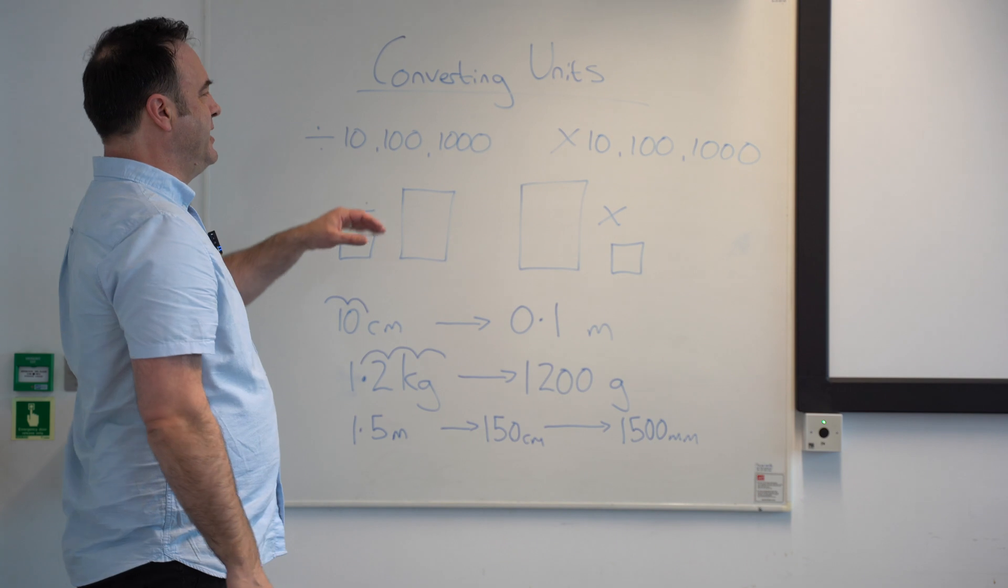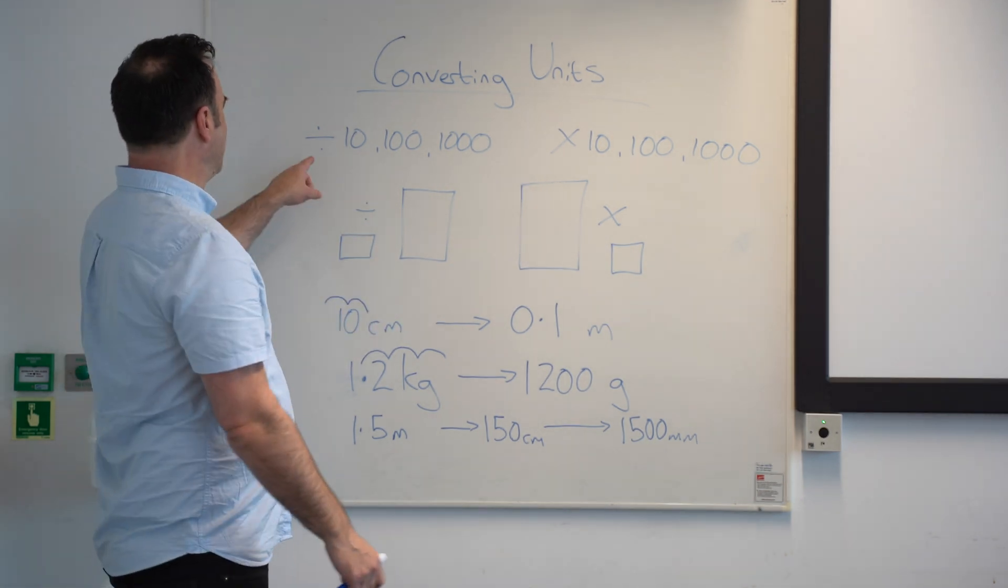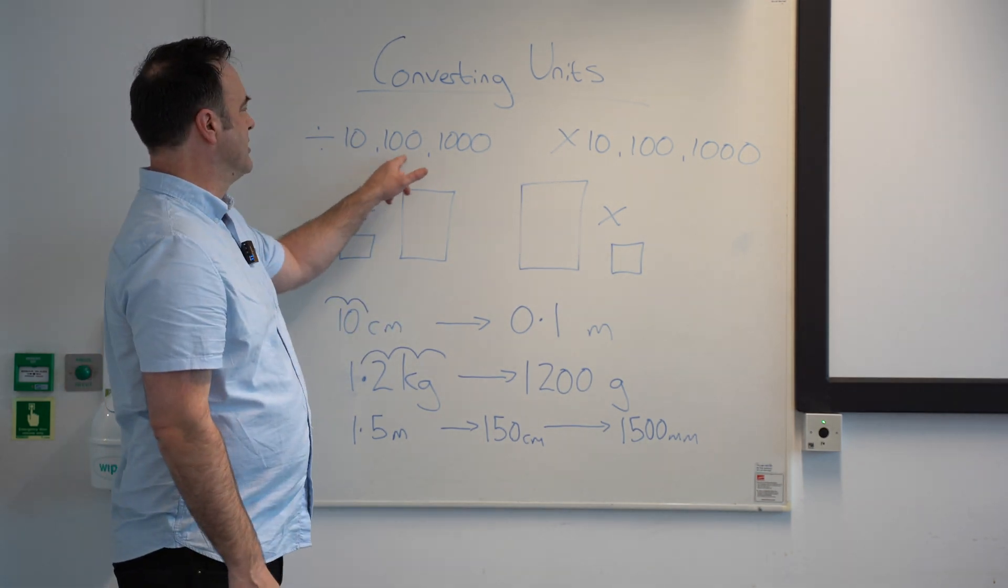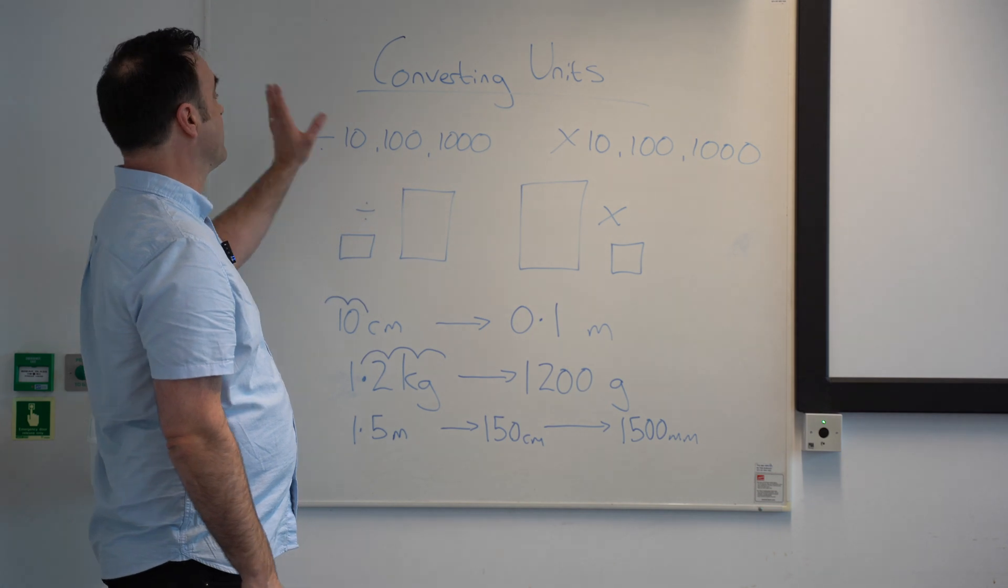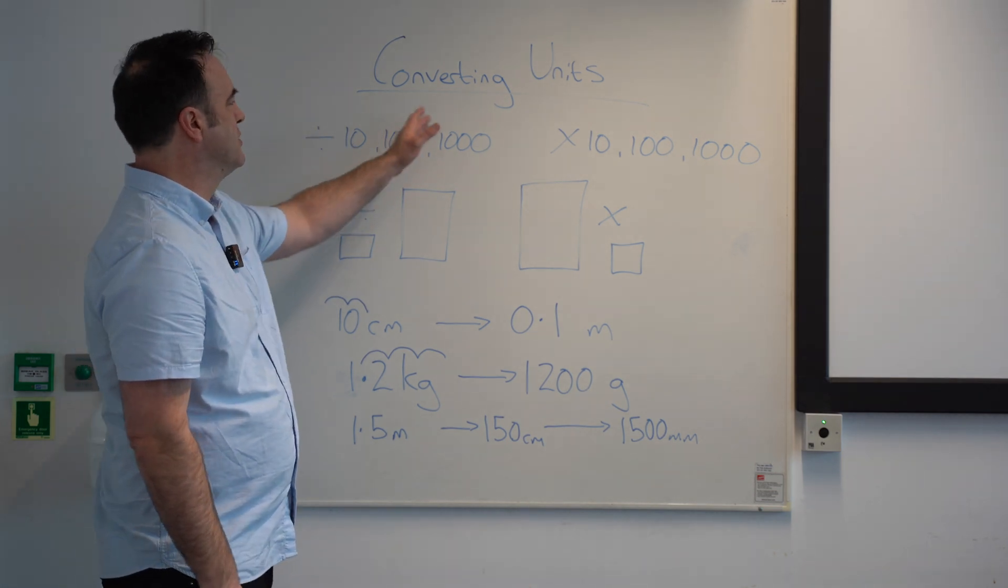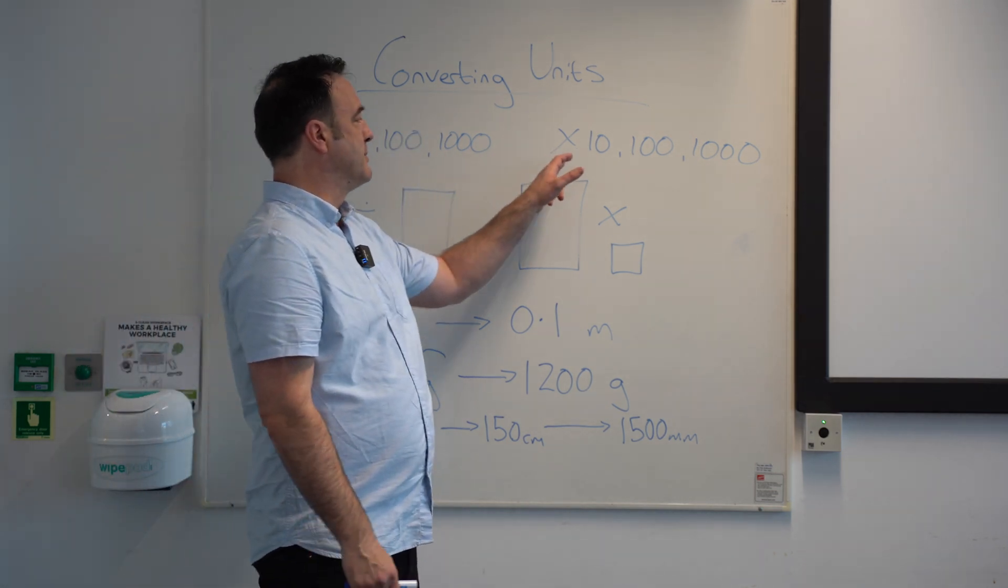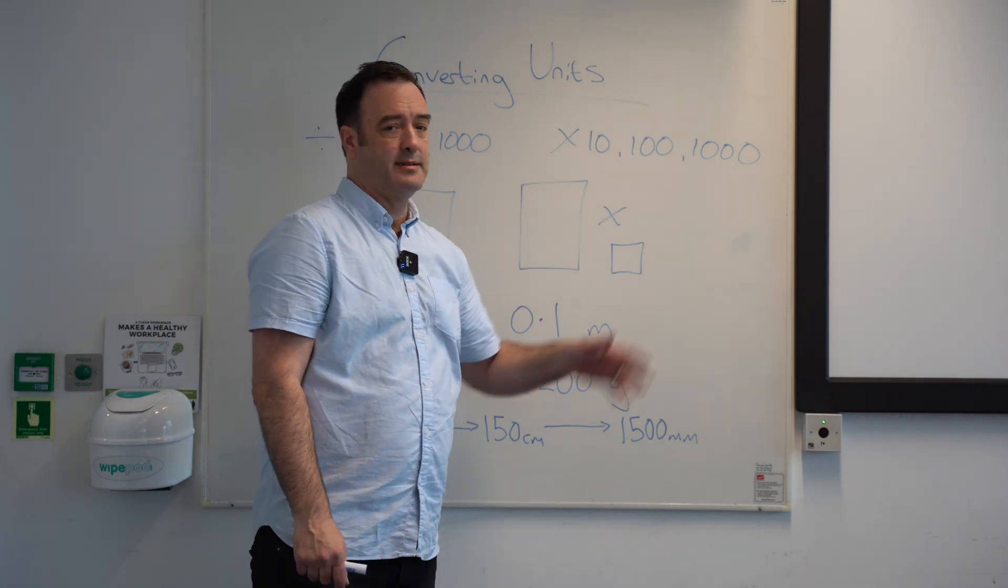When we're converting units, what we're essentially doing is either dividing by 10, 100, 1,000 or multiplying by 10, 100, 1,000 or more.